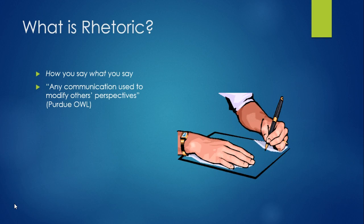According to the Purdue OWL, rhetoric is any communication used to modify others' perspectives. And when we're modifying someone's perspective, we are really doing one of the things we do best, which we talk about a lot in composition courses: persuasion. We are persuading somebody to see the world just a little bit differently after reading our work. That's really what we're doing with rhetoric.